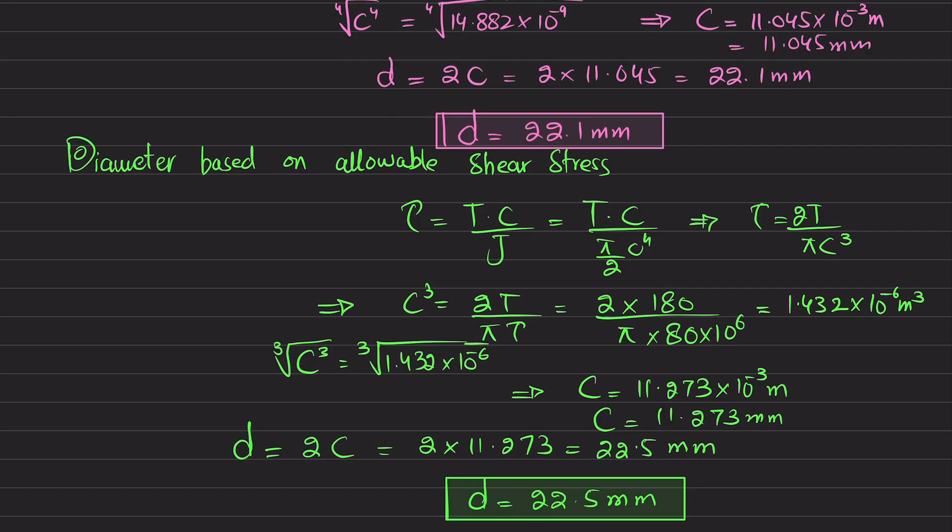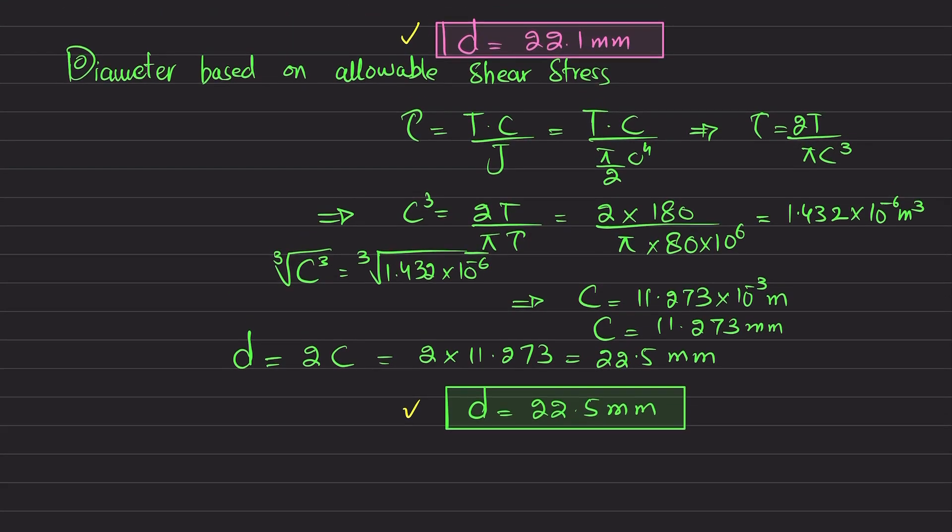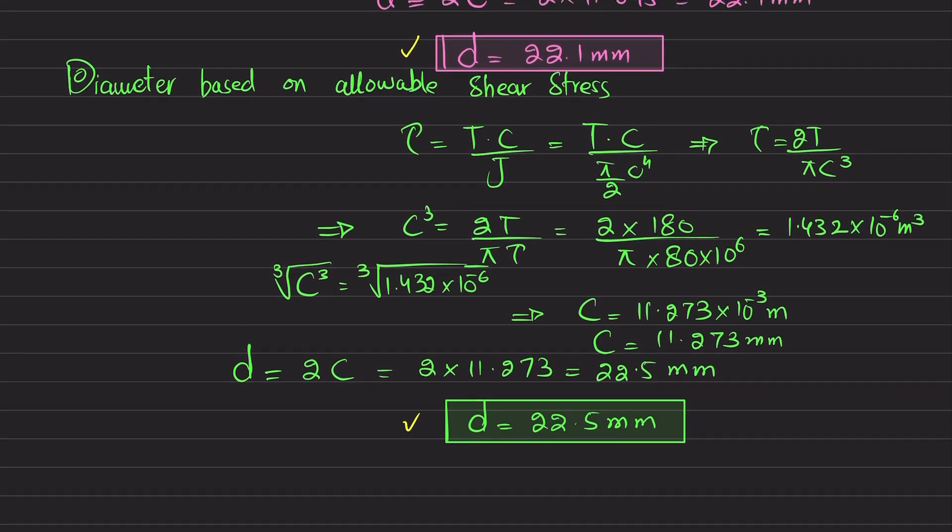Now you can check that we have two diameters. The first one is calculated based on displacement, and this one is based on allowable shearing stress. We will choose the larger value of diameter, which is 22.5 millimeters, because it will be safer against the loading.